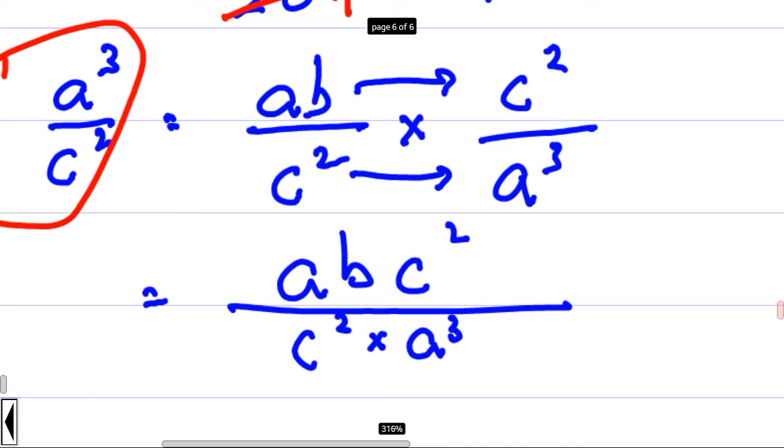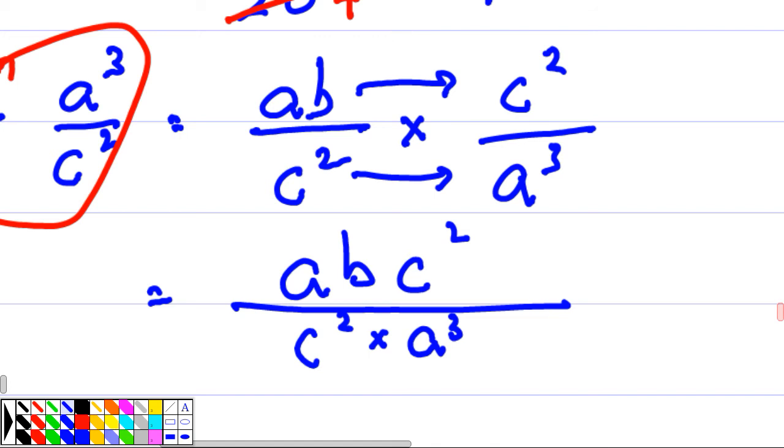Now, let's try and cancel out. Cancel out means what? What do I want? How do I cancel? c squared got 2. c squared got 2. So I cancel everything.